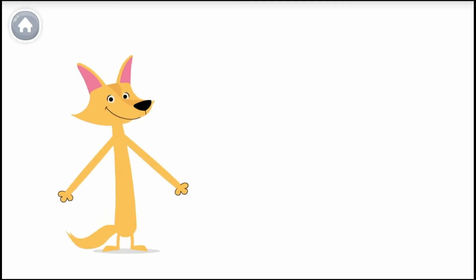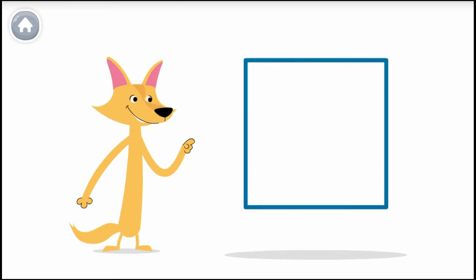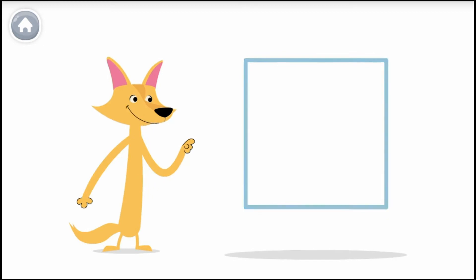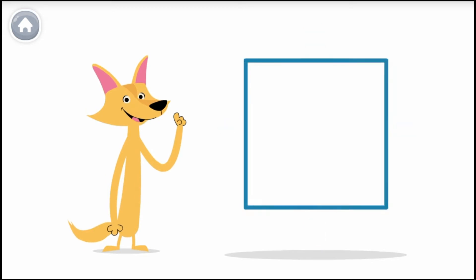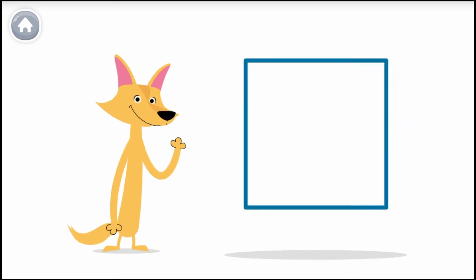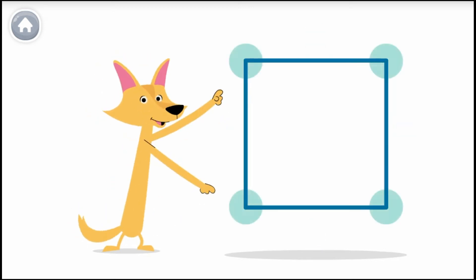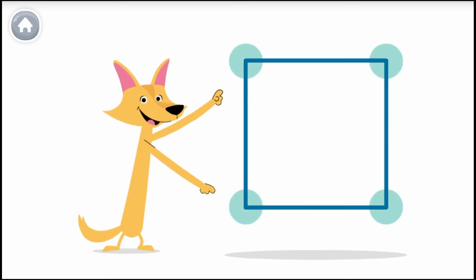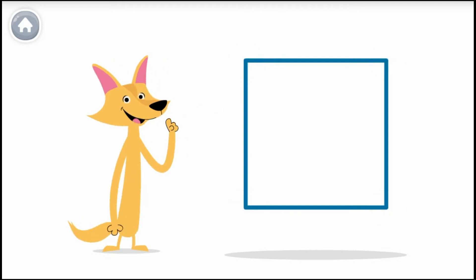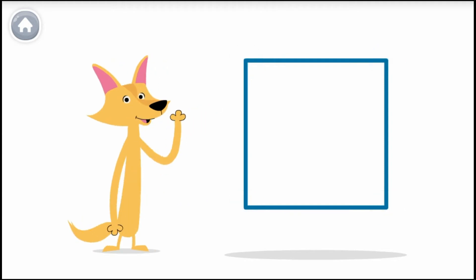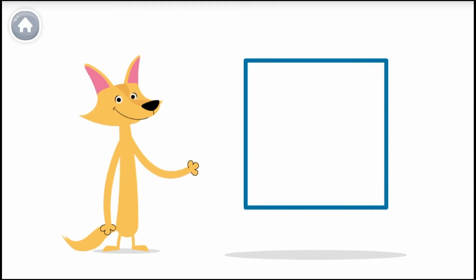Hey! This is a square. A square has four equal sides and four corners. Equal means the same. Corners are where the lines meet. An example of a square is a window.